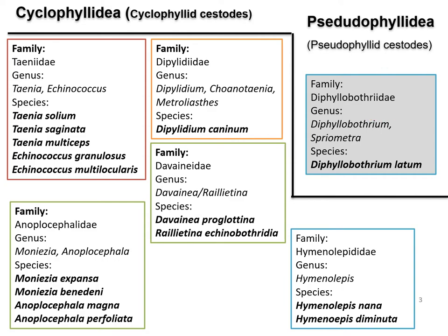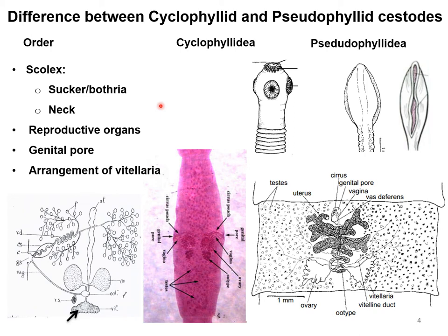Before I start talking about the genus Diphylobothrium or the species Diphylobothrium latum, I would like to talk about the difference between Cyclophyllidea and Pseudophyllidea. We are classifying all the cestodes under two orders: one is Cyclophyllidea and another one is Pseudophyllidea. Knowing the common characteristics of these two orders allows you to apply those features when studying individual parasites.